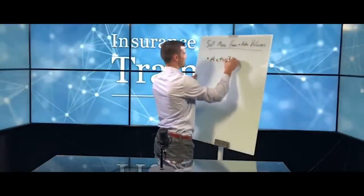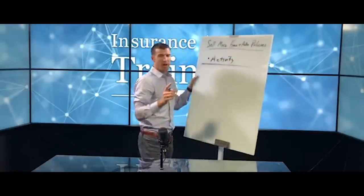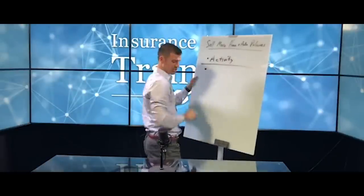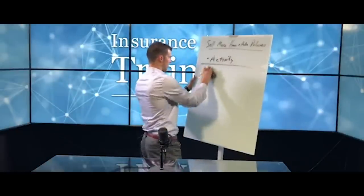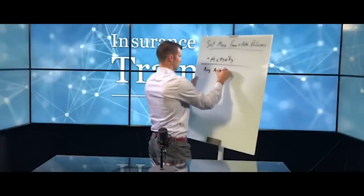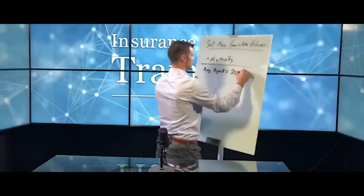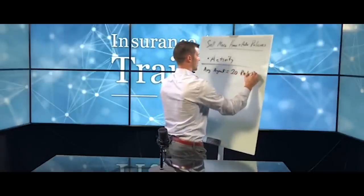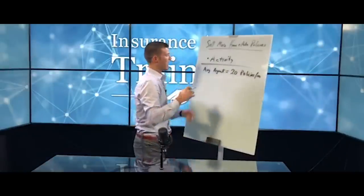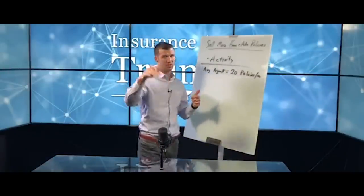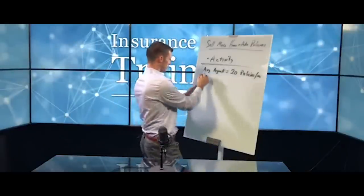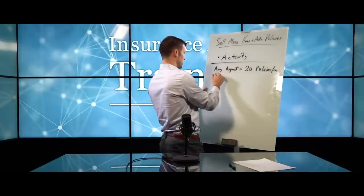Home and auto is all about activity. An average agent will close about 20 policies per month. I do coaching sessions with home and auto agents. I know some major home and auto players. The insurance suit guys are speaking at the conference. I've got a couple of home and auto guys in my own office. So I understand it. Average agent does this.